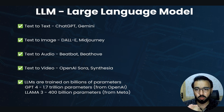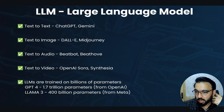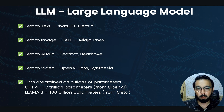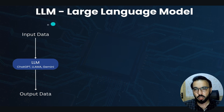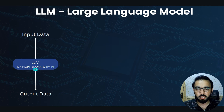LLMs are trained on billions of parameters. GPT-4 is trained on 1.7 trillion parameters, and Meta's Llama 3 is trained on 400 billion parameters. Visually, this is how an LLM works: you have input data, you give it to an LLM model — which could be ChatGPT, Llama, or Gemini — and it generates output data.